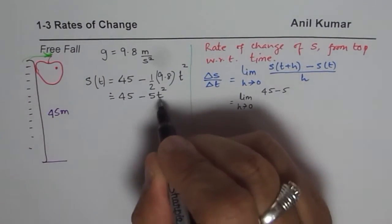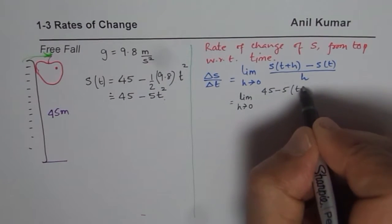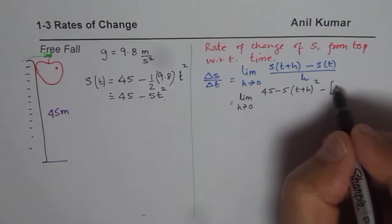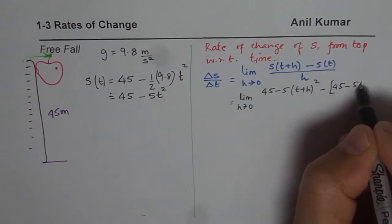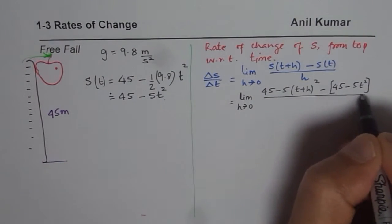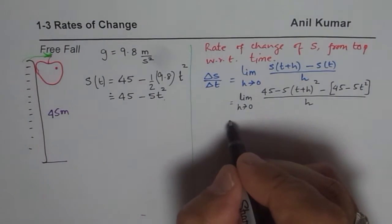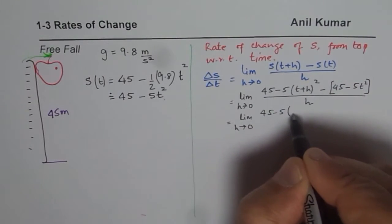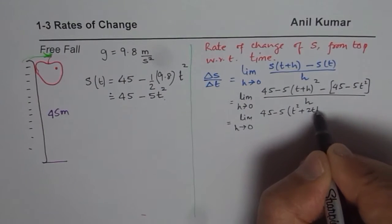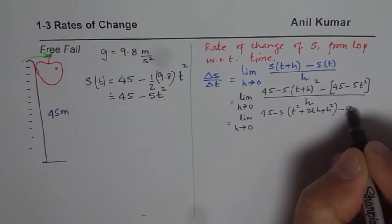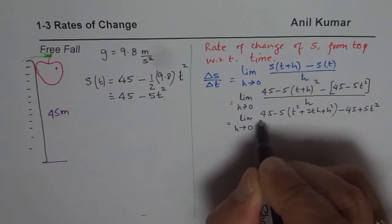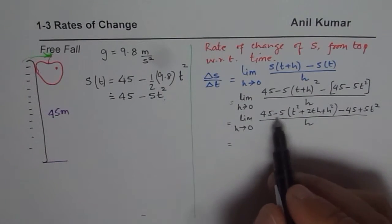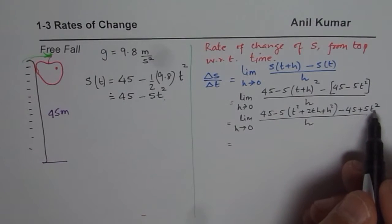Substituting, we compute the limit as h approaches 0 of: [45 minus 5(t + h)²] minus [45 minus 5t²], all over h. Expanding gives the limit as h approaches 0 of: 45 minus 5(t² + 2th + h²) minus 45 plus 5t² over h. The 45 minus 45 cancels to 0, and minus 5t² plus 5t² also cancels to 0.